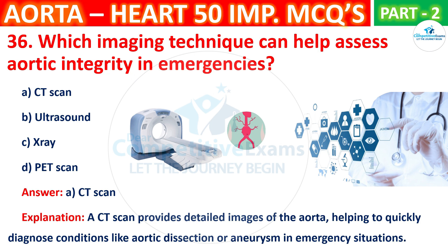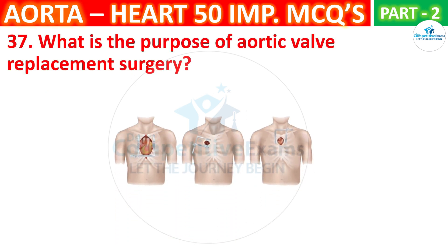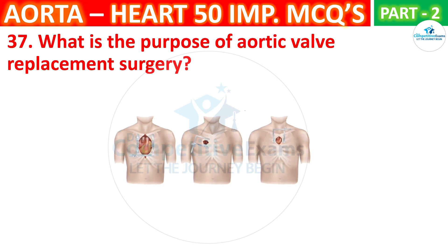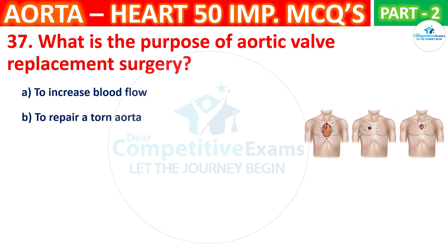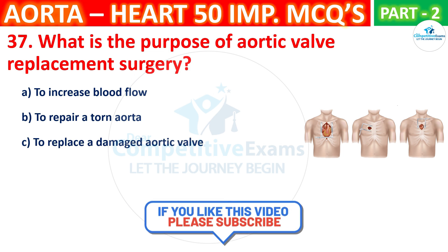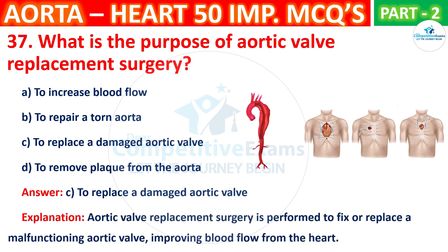Question No. 37. What is the purpose of aortic wall replacement surgery? The options are: To increase blood flow, to repair a torn aorta, to replace a damaged aortic wall, or to remove plaque from the aorta. The correct answer is C, that is to replace a damaged aortic wall. Aortic wall replacement surgery is performed to fix or replace a malfunctioning aortic wall, improving blood flow from the heart.